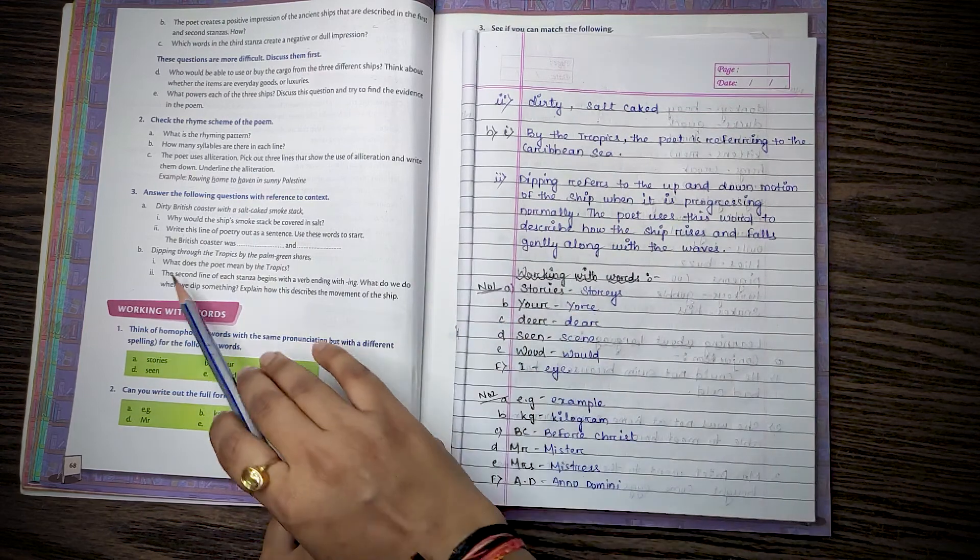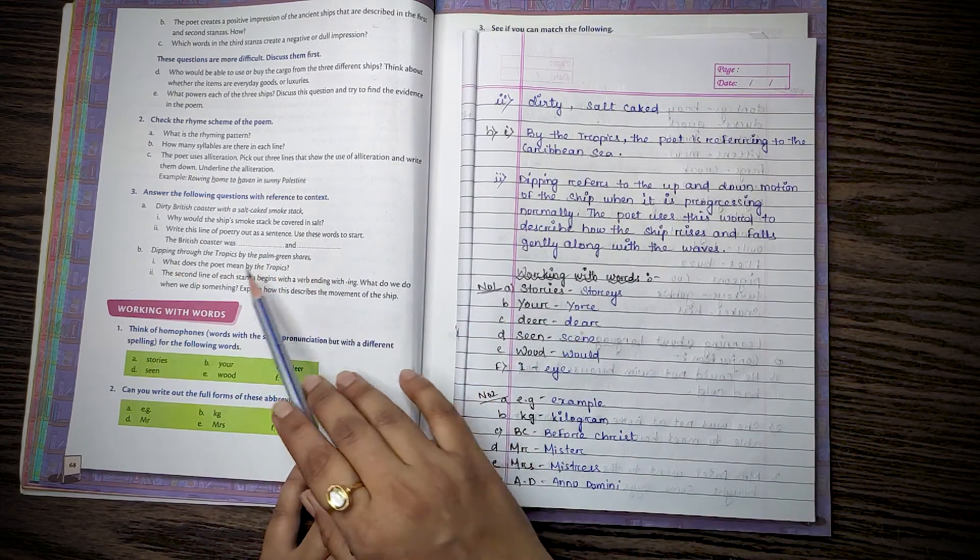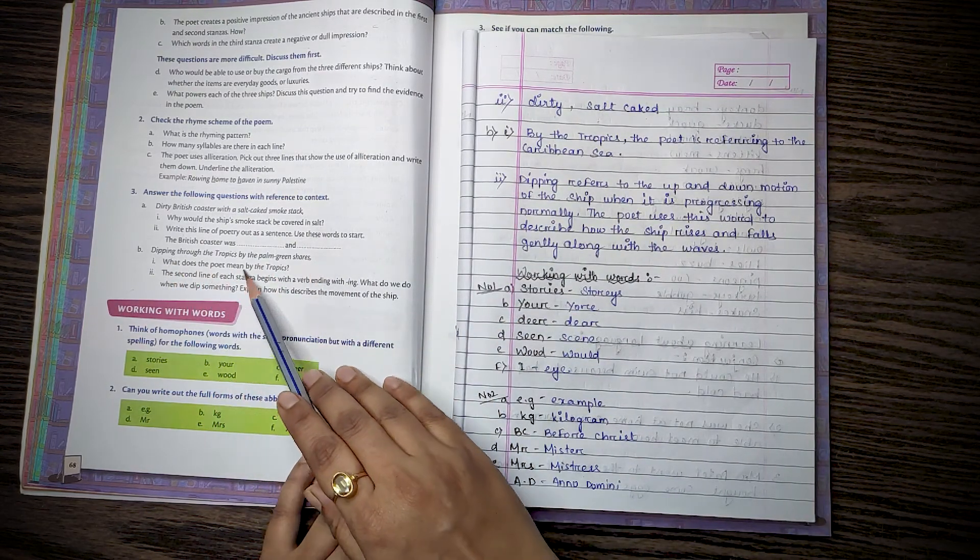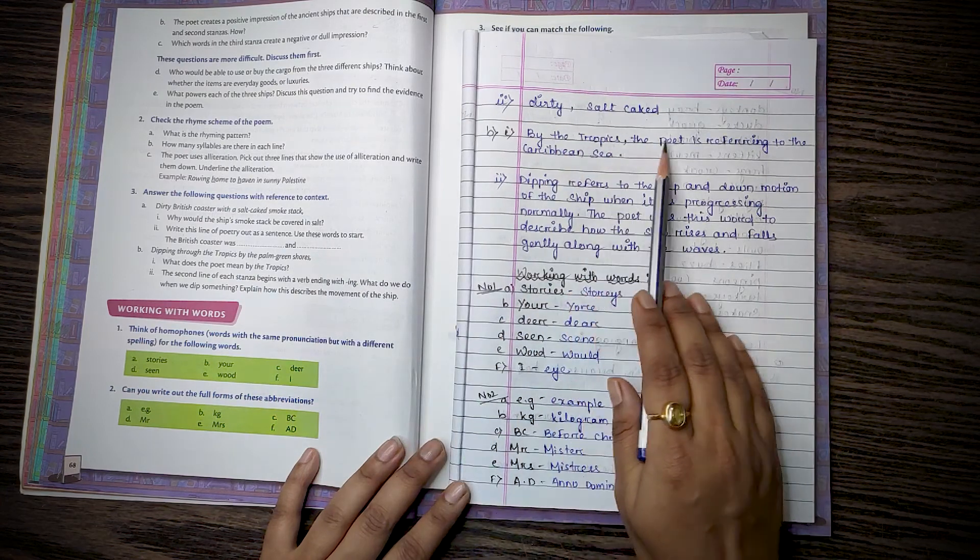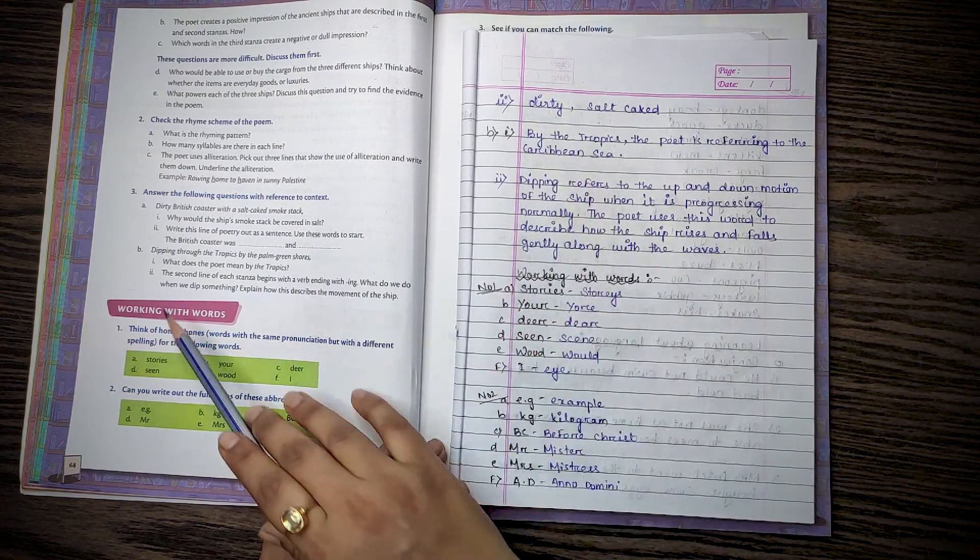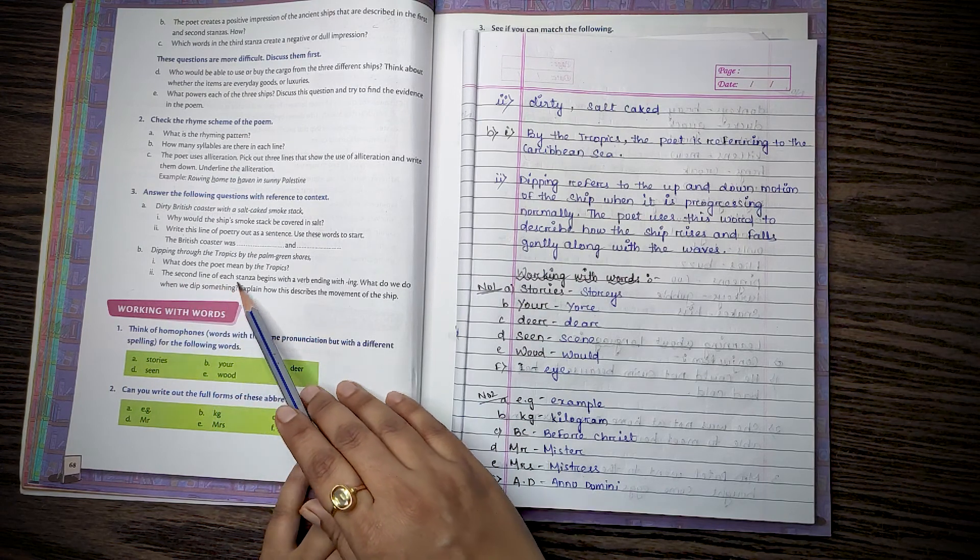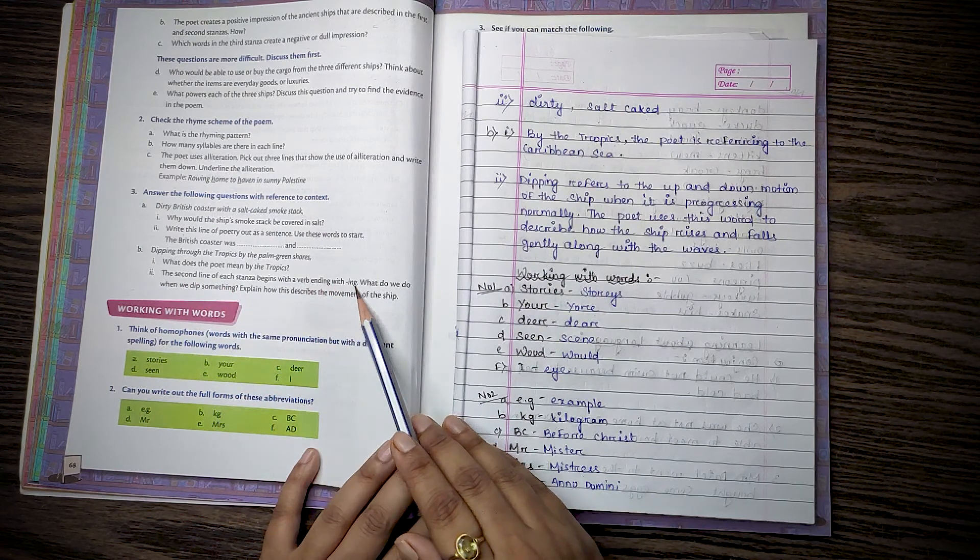Then B. Dipping through the tropics by the palm green shores. What does the poet mean by the tropics? By the tropics the poet is referring to the Caribbean Sea. The second line of each stanza begins with the verb ending with ing.